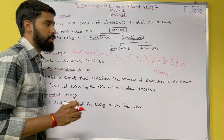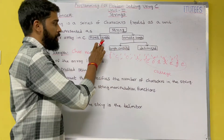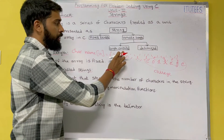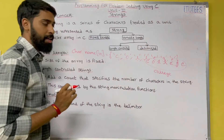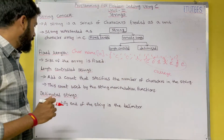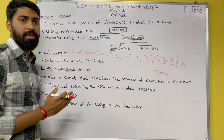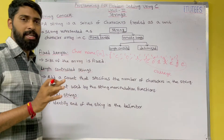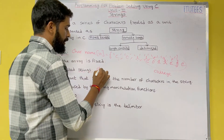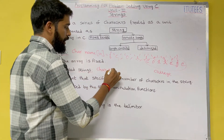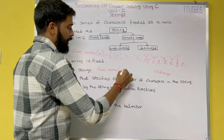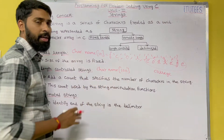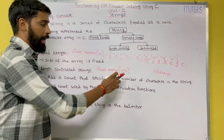Coming to the string concept, we have two types: fixed length and variable length. In variable length we have two types: length-controlled and delimited. Let's discuss in detail. Fixed-length strings mean the size of the array is fixed. For example, if I define an array like char name[100], that means the array can store 100 characters.